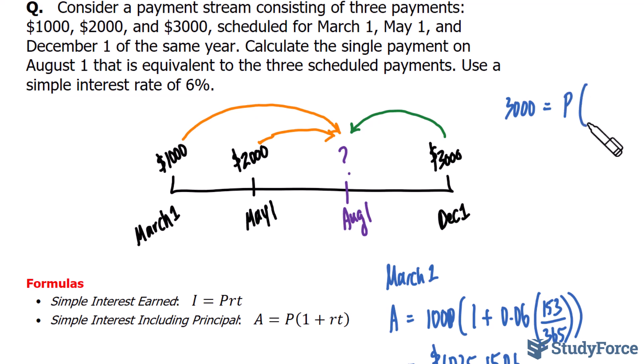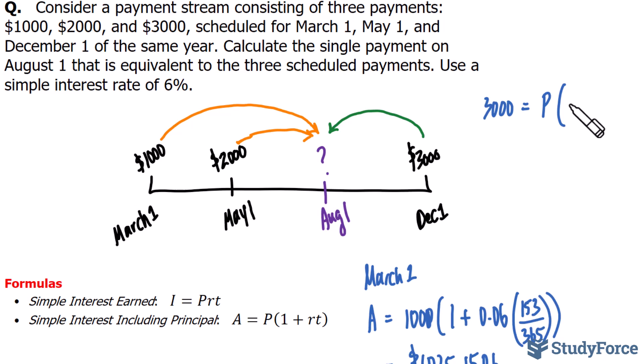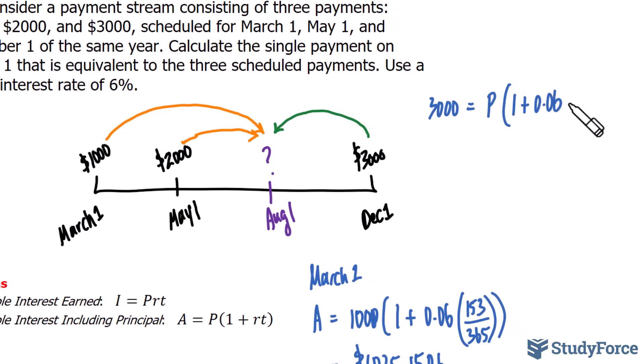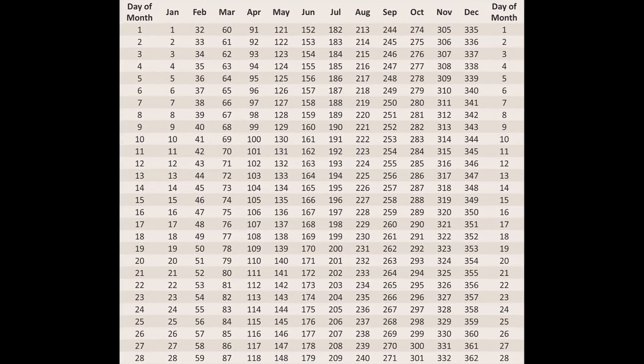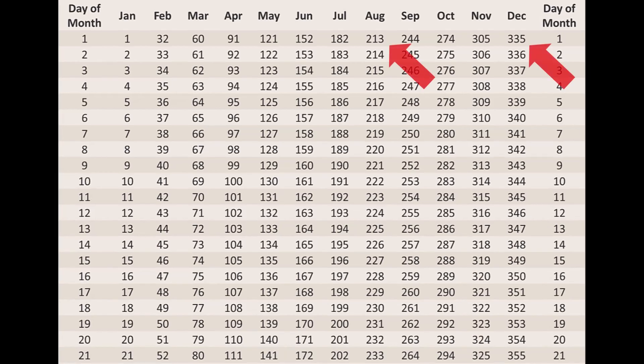Remember only to do it this way when you are discounting backwards. So, this time, P is unknown to us. And we'll write down (1 + 0.06). The difference between December 1st and August 1st is 122 days. Take a look at the chart. And so, I'll write down 122/365.